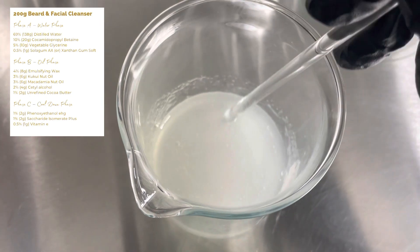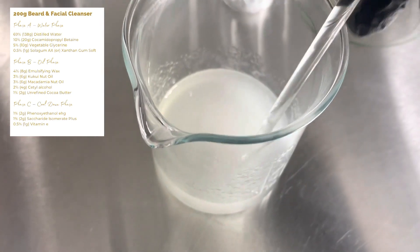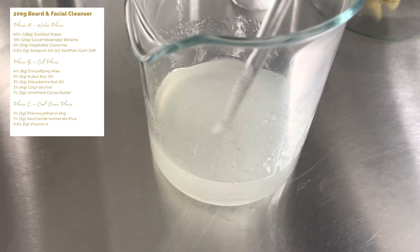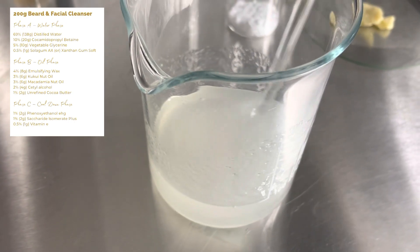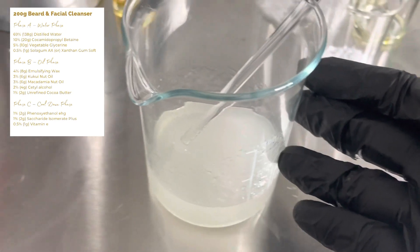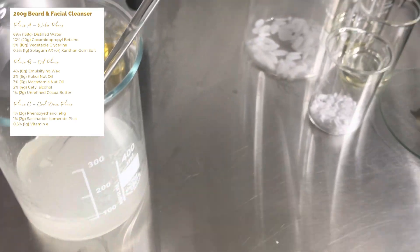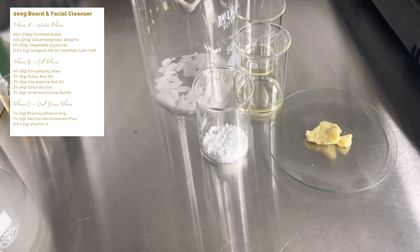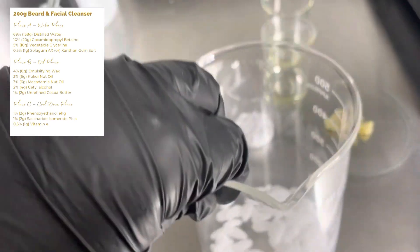And that's our water phase, basically. The solar gum is our thickener, the vegetable glycerin is our humectant, and the cocamidopropyl betaine is obviously our cleanser. Water won't give bubbles, but it'll give a nice creamy lather.